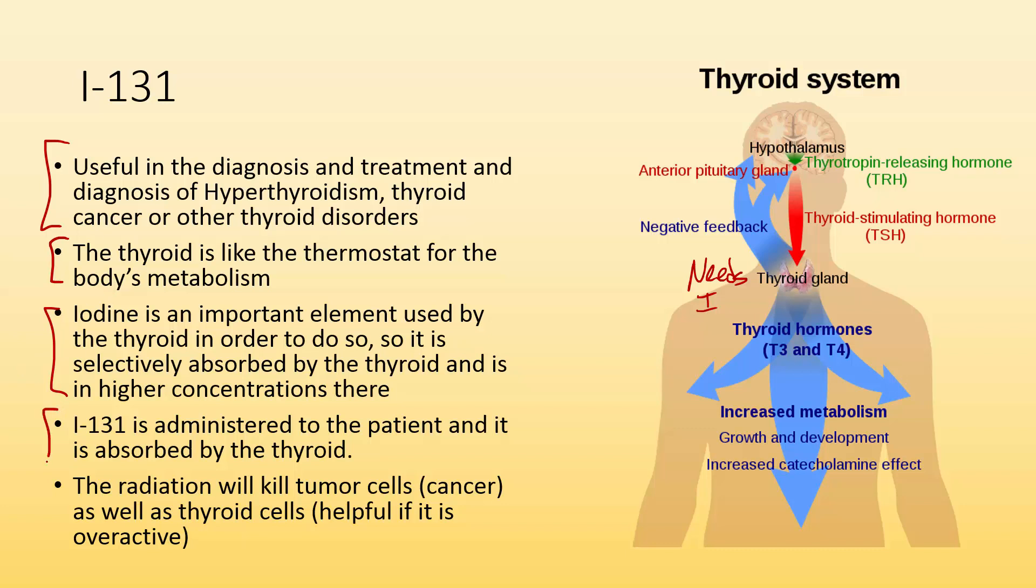Iodine-131 is administered to the patient, and it'll be absorbed by the thyroid, and the radiation will kill any tumor cells if you have a tumor in the thyroid. As well, if you had hyperthyroidism, it's going to weaken the thyroid cells. So it's going to slow down your metabolism, which will help account and negate the hyperthyroidism. Iodine-131, think the thyroid.